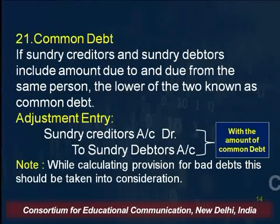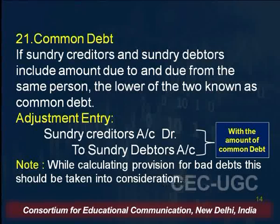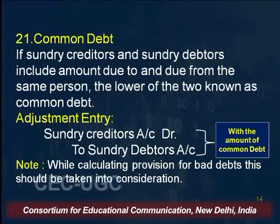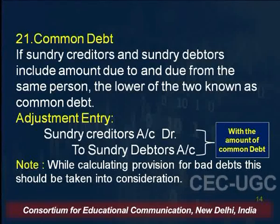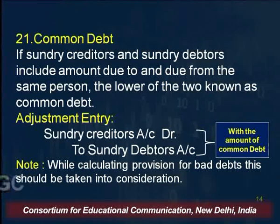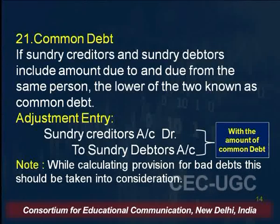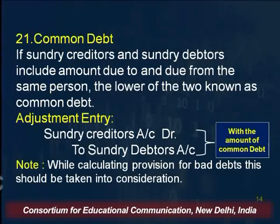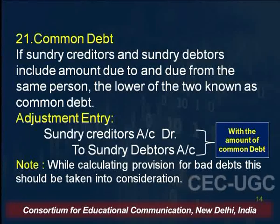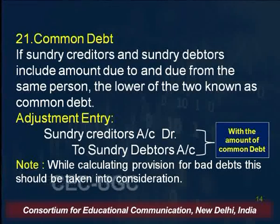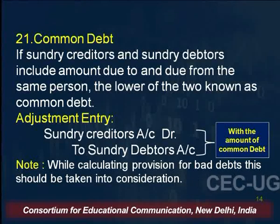The next adjustment entry is common debt. What if the same person is our debtor and creditor as well? If sundry creditors and sundry debtors include amounts due to and due from the same person, the lower of the two is known as common debt. The adjustment entry would be: Sundry Creditors Account debit to Sundry Debtors Account. Creditors are debited and debtors are credited with the lower of the two amounts, to neutralize the effect of the common debt.